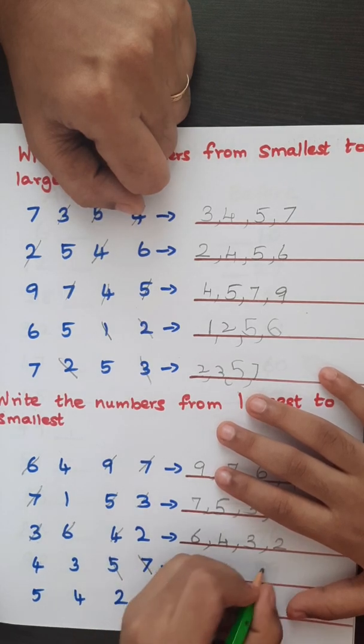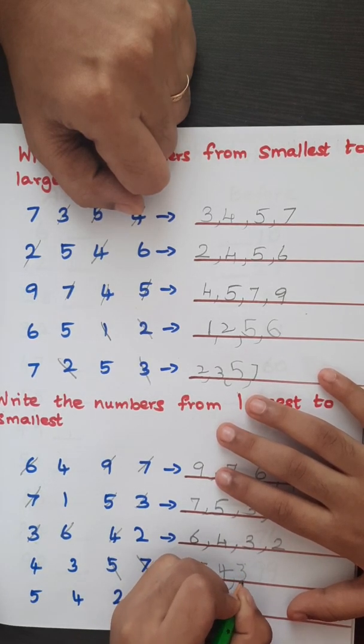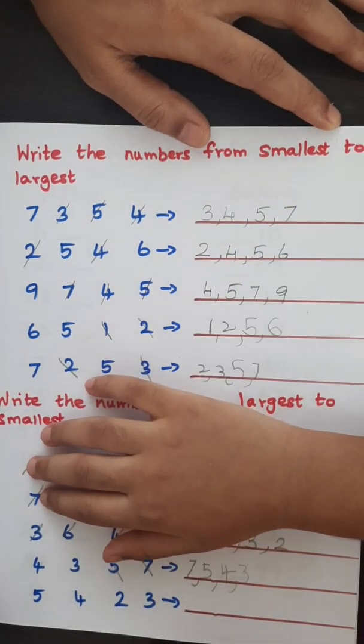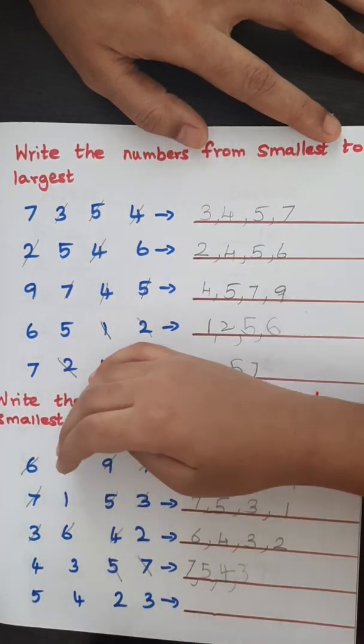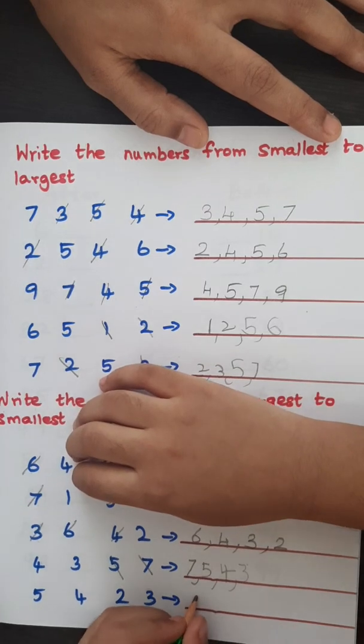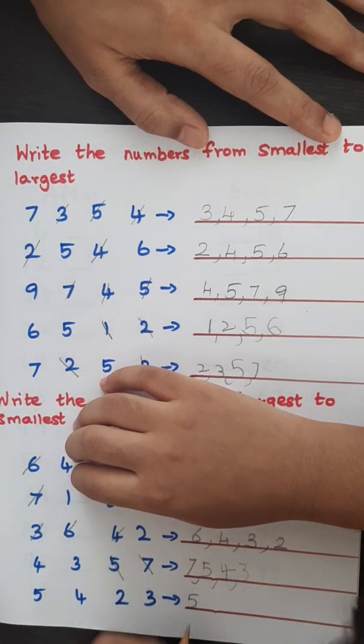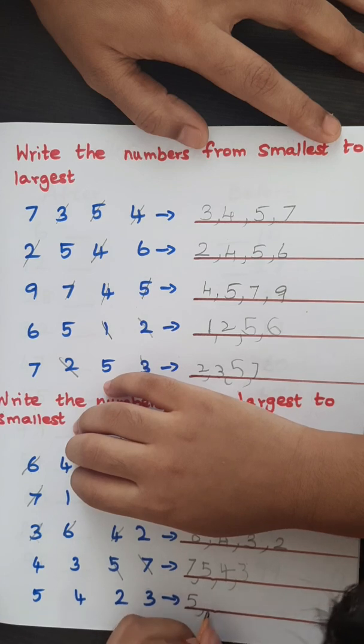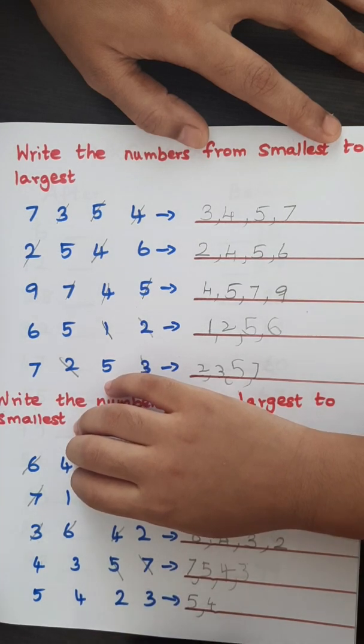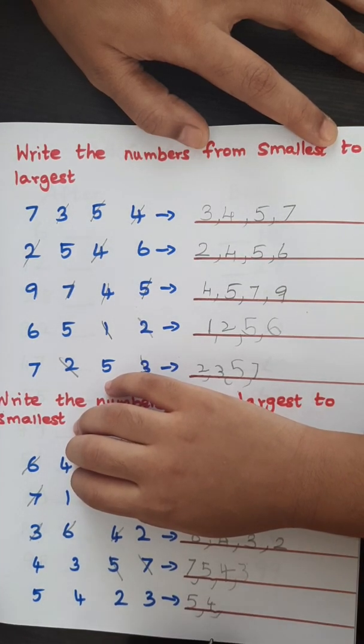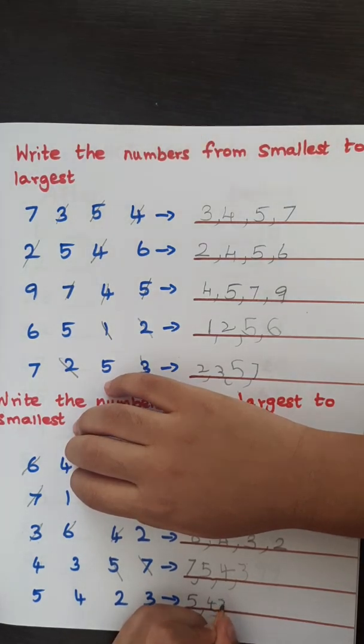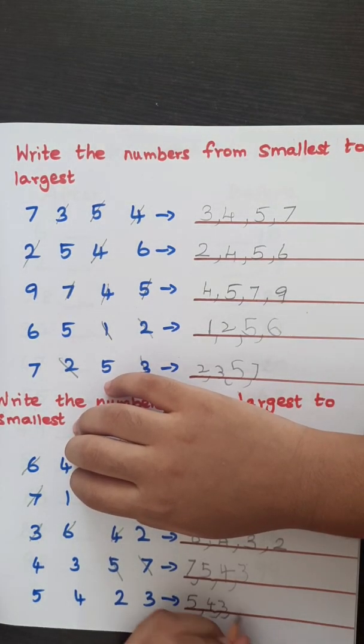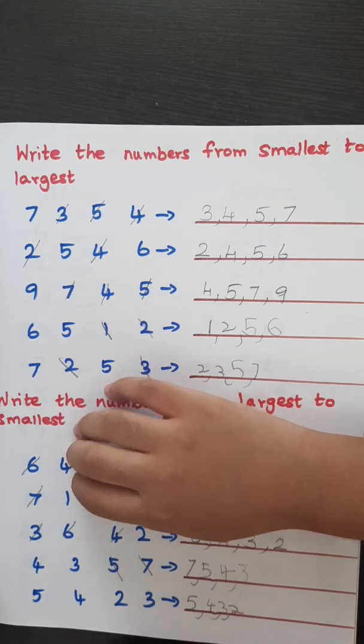Three. Then three, very good. Can you do the next one? Yeah, yeah. So five. Four. Three. Two.